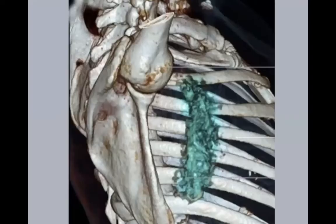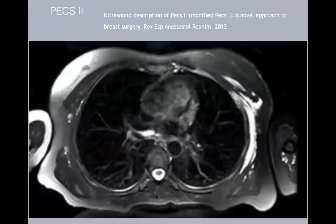Looking at this MRI reconstruction, you can nicely guess the effect of these blocks over the hemithorax. You see ribs two, three, four, five, and six — the space between ribs two and three is the intercostobrachial, then three through six — so you cover a large part of the hemithorax. You miss a bit at the top, but that can be addressed with something else. With the PECS2, the gadolinium covers the plane at the second level and the first level between the two muscles.